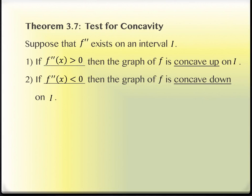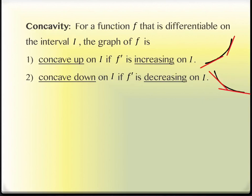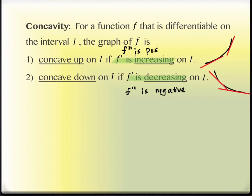That actually feels like something we did in Section 3.3. We looked at things being positive and then defining something for us. In particular, if the derivative was positive, then we ended up having a graph that was increasing. And if a derivative was negative, then the graph was decreasing. So this is a similar statement — it's just about second derivatives. What do we have to do to decide if something is increasing? We take its derivative and we find out if it's positive. So f prime is increasing is the same statement as saying f double prime is positive. And f prime is decreasing is the same thing as saying f double prime is negative.